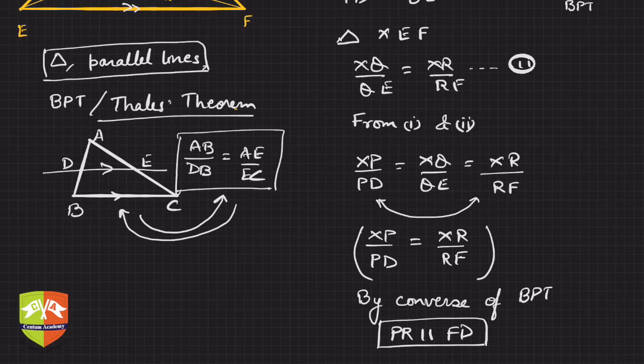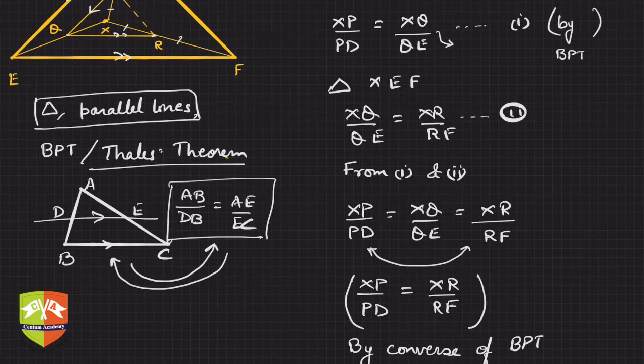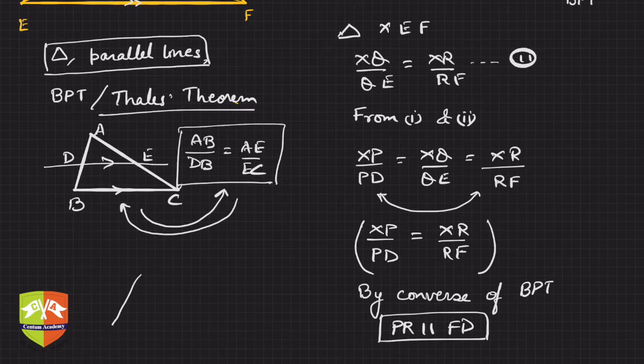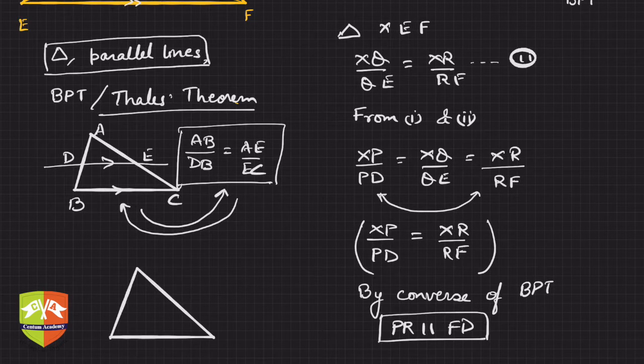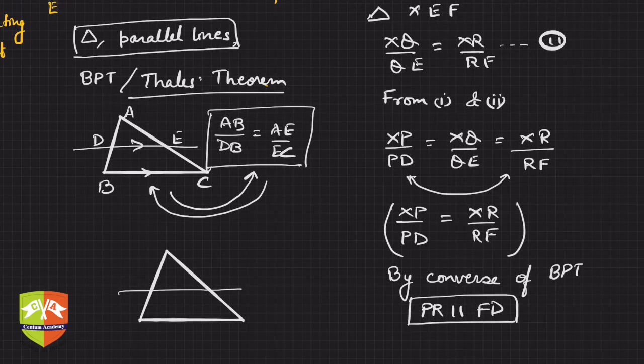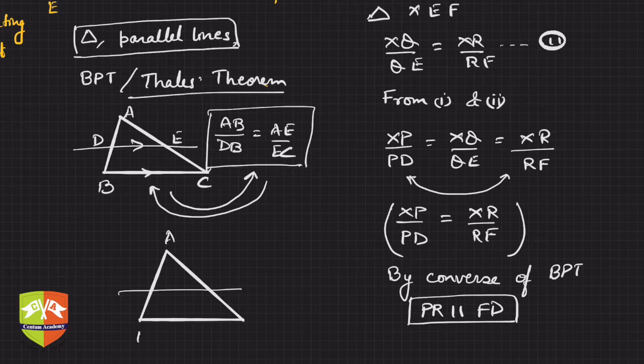This is what you needed to prove. By converse of BPT, what is converse of BPT? We just learned that if in a triangle, there's a line like this, let's say ABC and let's say D and E.